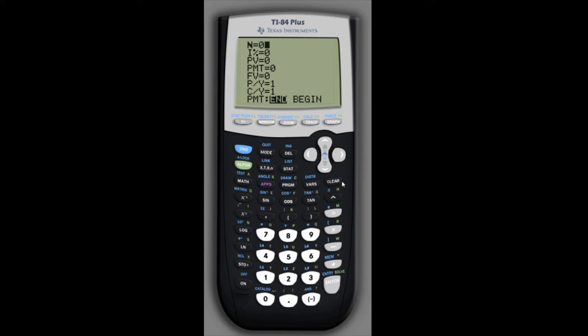N is the total number of compounding periods. So since we're compounding monthly for six years, we need to multiply 12 times 6. Now if we do that in our heads we could type in 72 here, or we can just type in 12 times 6 and let the calculator do that for us.